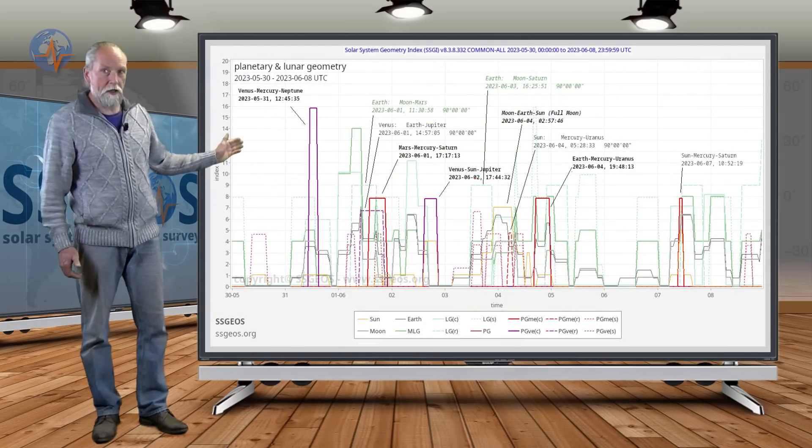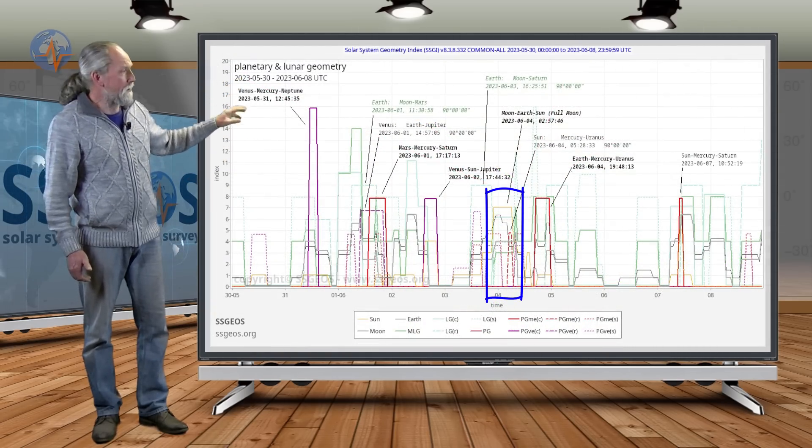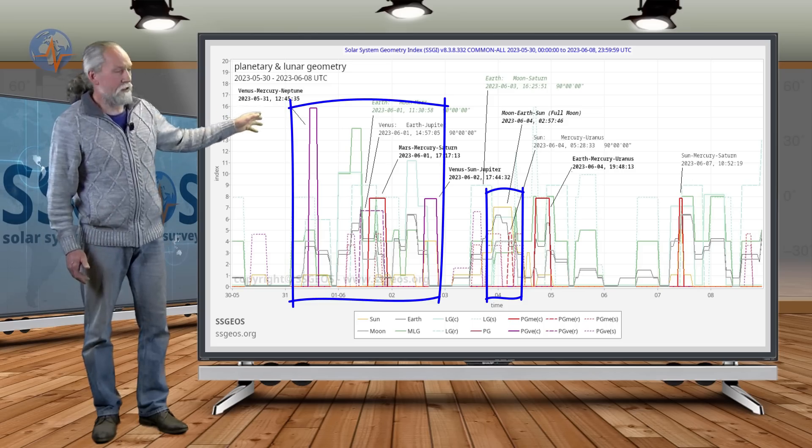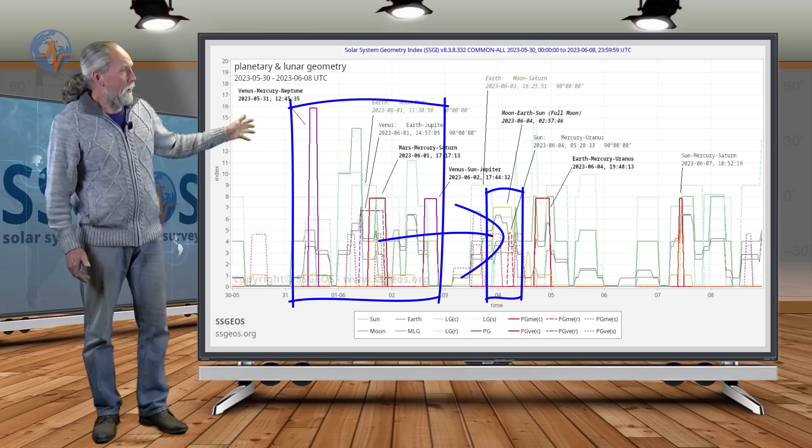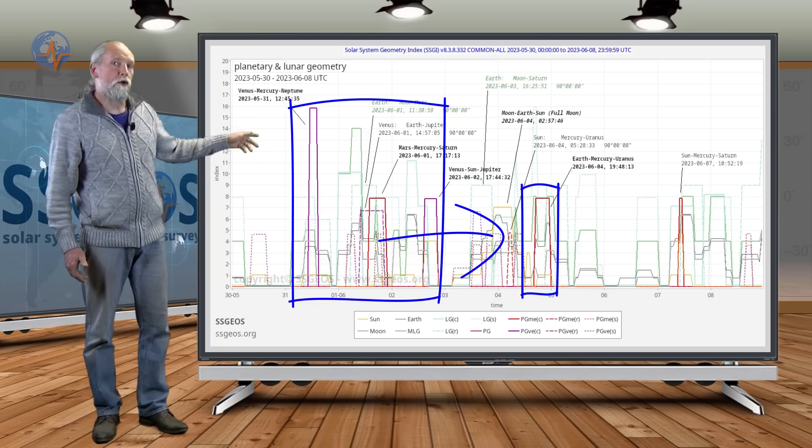So if we go back to the SGI graph here, we see on the 4th the full moon, and we can see that the critical planetary geometry—that's the convergence on the 31st, the 1st and 2nd of June—happens just days before the full moon. And right there, Earth will be in conjunction with Mercury and Uranus as well.